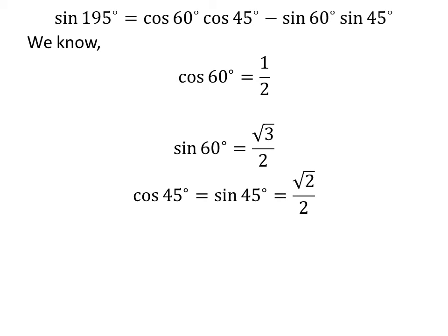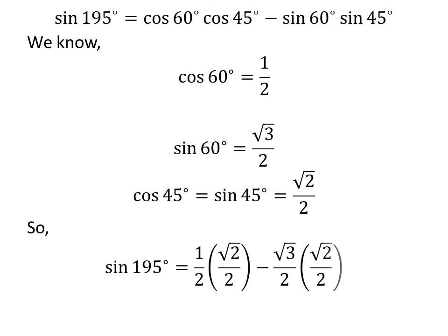As we know, cosine of 60 degrees is equal to 1/2, sine of 60 degrees is equal to square root of 3 upon 2, and cosine of 45 degrees is equal to sine of 45 degrees is equal to square root of 2 upon 2. So we plug in these values in the above equation. We get sine of 195 degrees is equal to 1/2 times square root of 2 upon 2, minus square root of 3 upon 2 times square root of 2 upon 2.